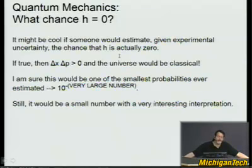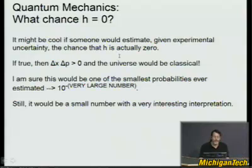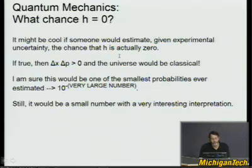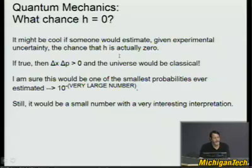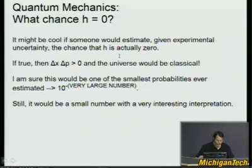First I want to take an aside and do a slide involving quantum mechanics and a thought that has occurred to me. What chance is there that H, the quantum mechanic constant — Planck's constant — is equal to zero? Everything in experimental physics is given some error bars, and with the big numbers involved in many worlds interpretations and how many universes there are, I thought it might be cool if someone would actually estimate, given experimental uncertainty, the chance that H is actually zero. If true, then delta X times delta P could be greater than zero and maybe the universe would be classical. Every second, lots of things happen that indicate there are energy levels tied to H, but I'm very curious how large that number would be that we're sure H is greater than zero.